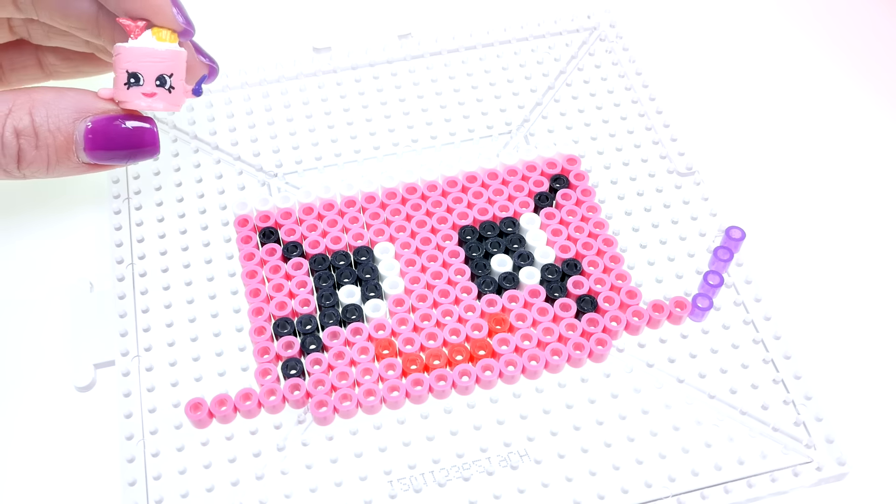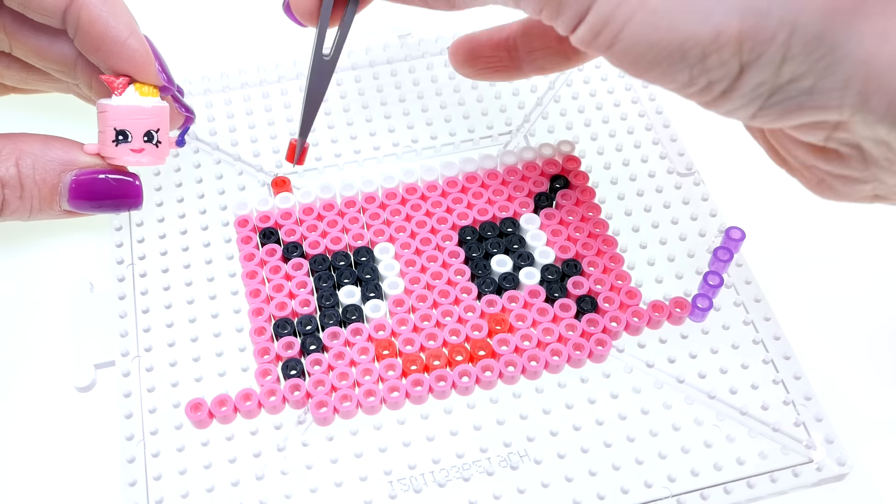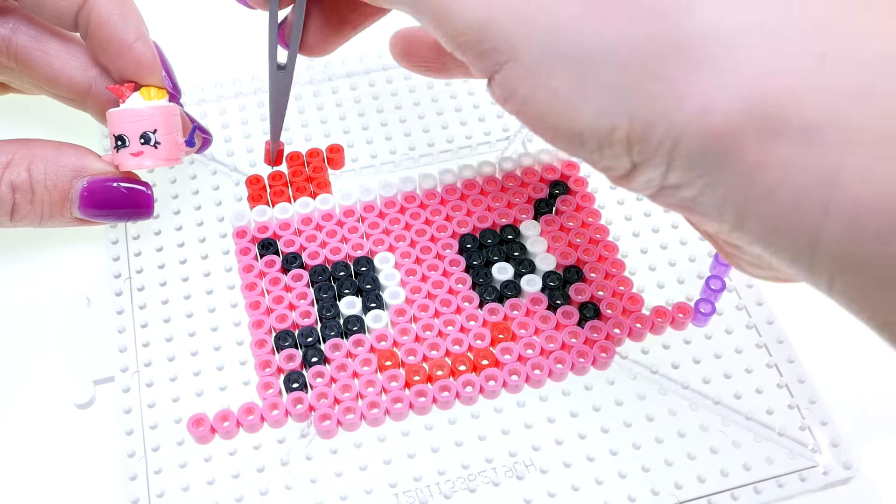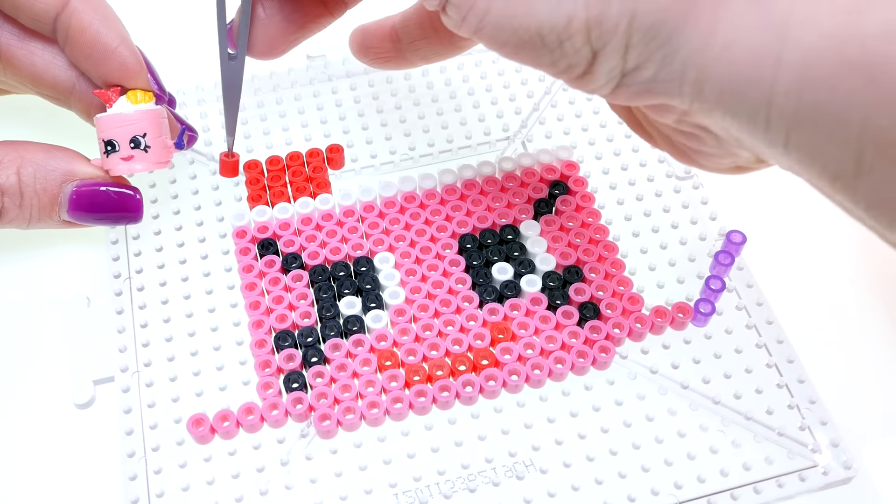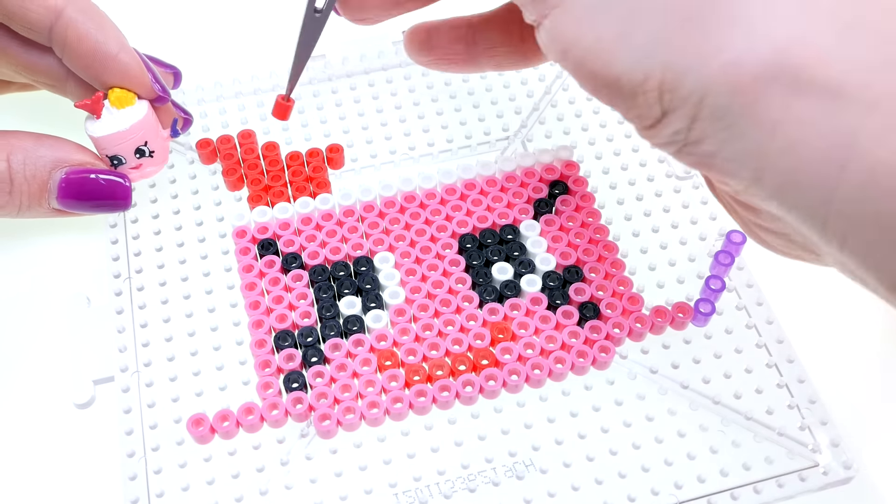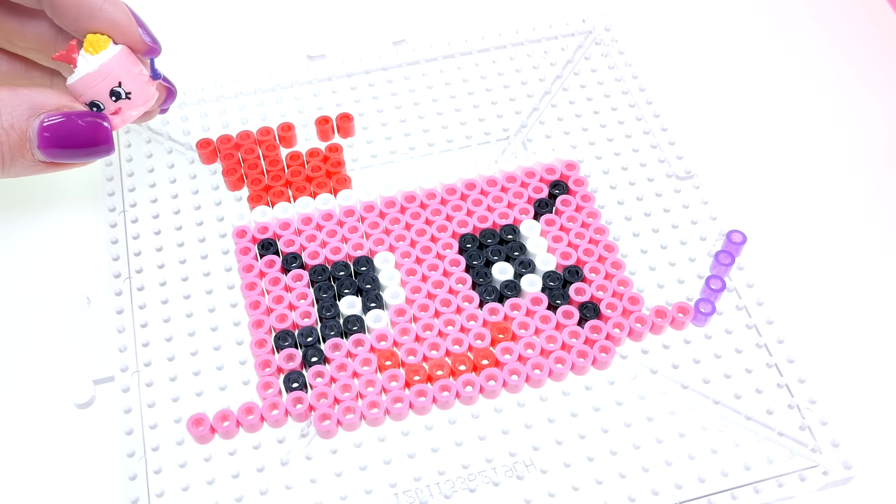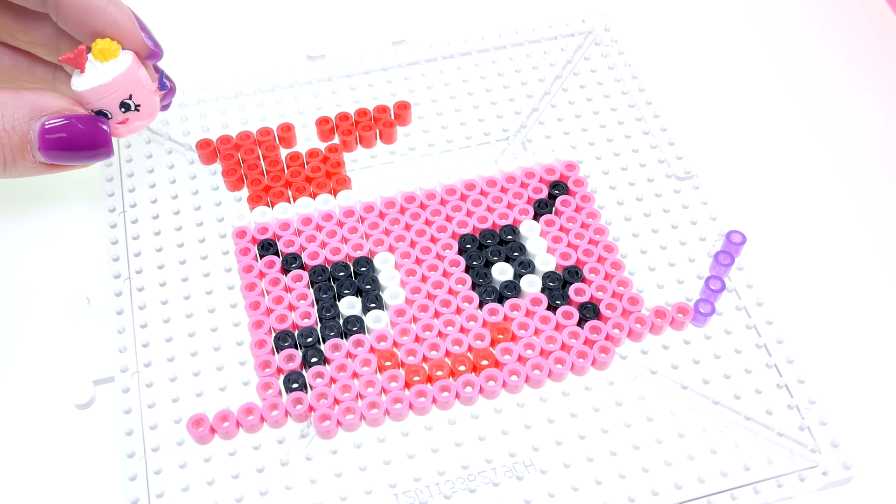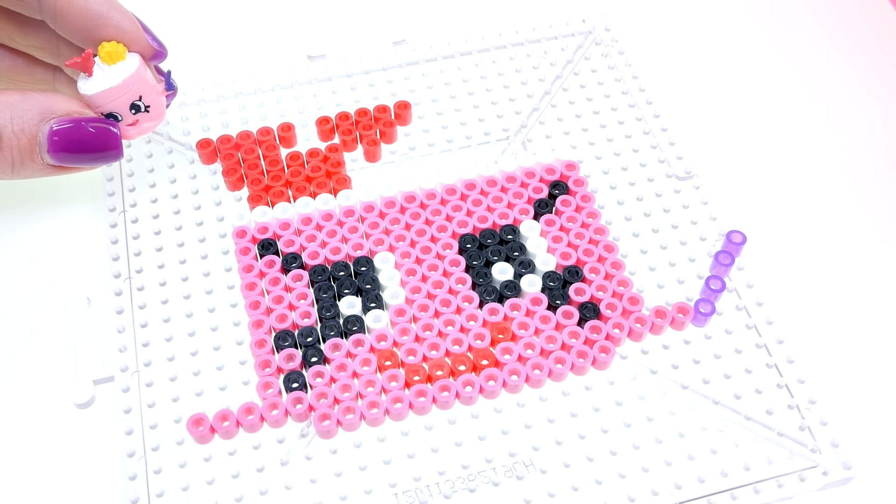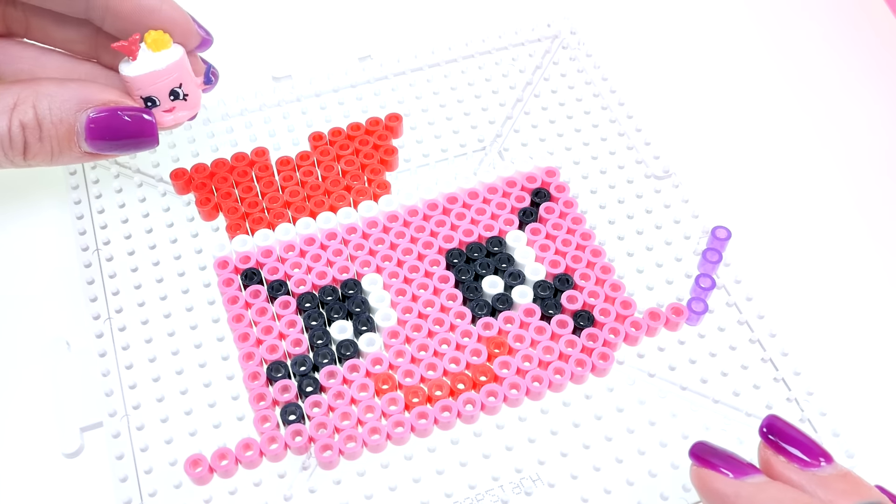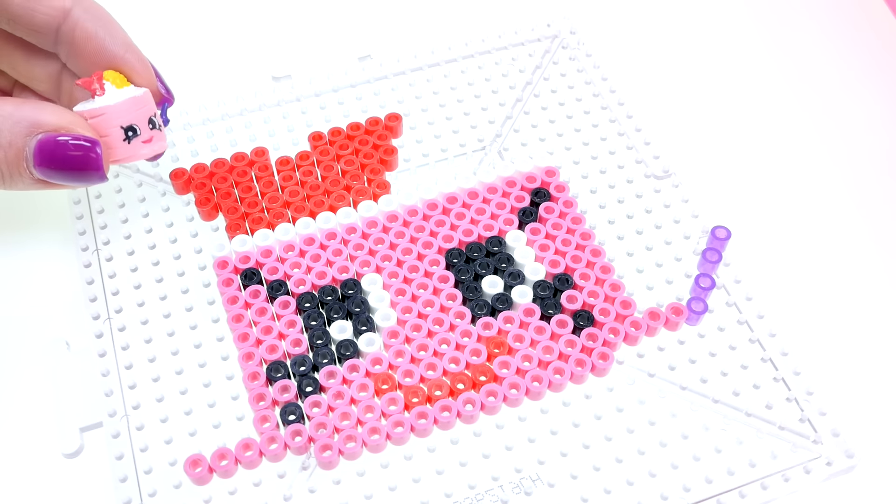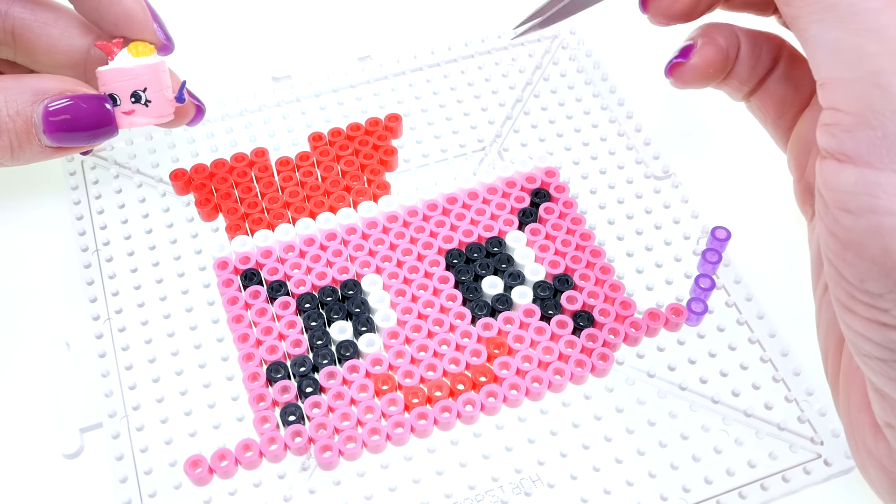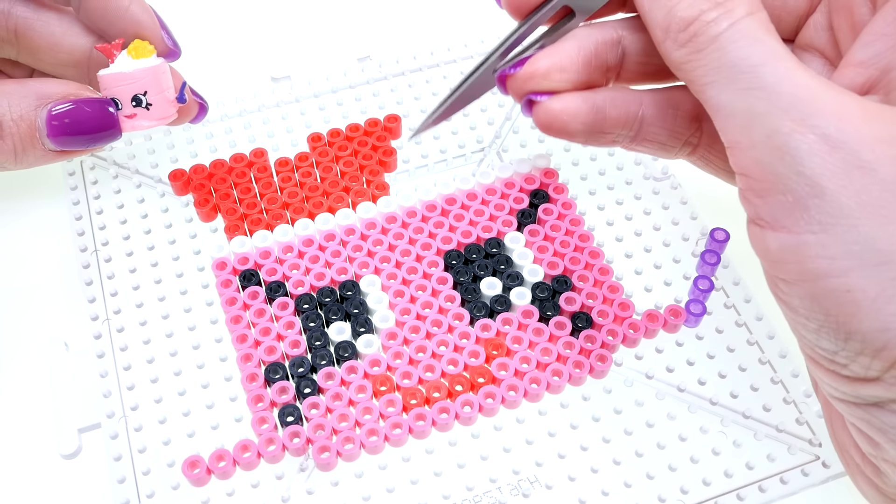Now the red tail is done and I'm going to come over to the right side and make the yellow part, and then I'll fill in the middle with white.